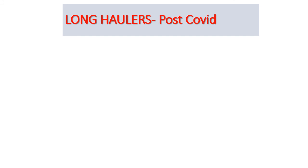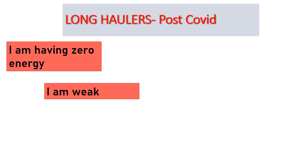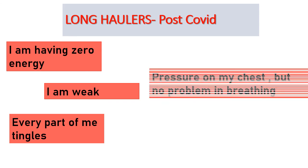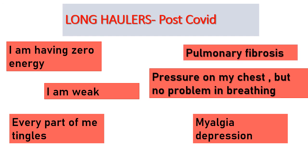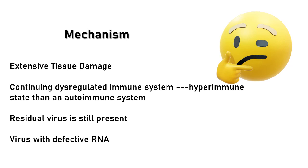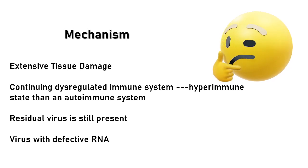Coming to the long-hauler syndrome or the post-COVID sequelae. In many patients after getting discharged to home, the problems start. This is something like a post-chikungunya or post-dengue syndrome, where the patient says they have zero energy, feeling weak, every part is tingling, there is pressure on the chest but no problem in breathing. The patient may come with myalgia, depression, and most importantly there is a subgroup of patients presenting with pulmonary fibrosis who are either ventilator-dependent or oxygen-dependent or having very poor quality of life after the disease. The exact mechanism is not known. It can be because of the extensive tissue damage, but it is considered to be because of the continued dysregulated immune system — a hyper immune system. It can also be because of residual virus still present in the body, or because the virus is having a defective RNA.